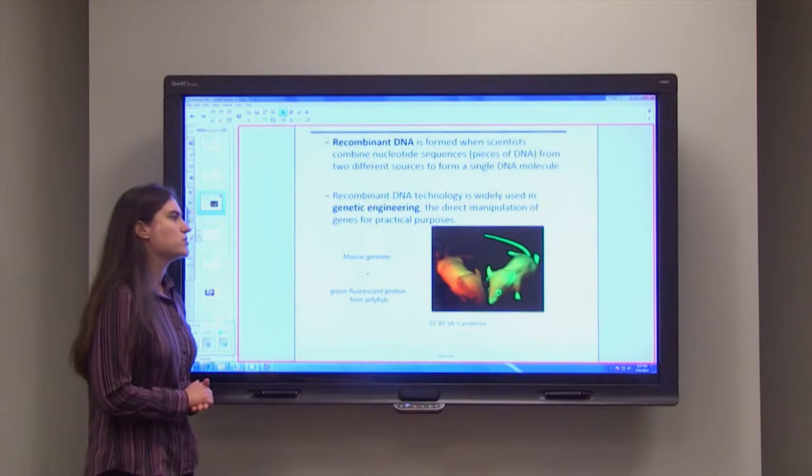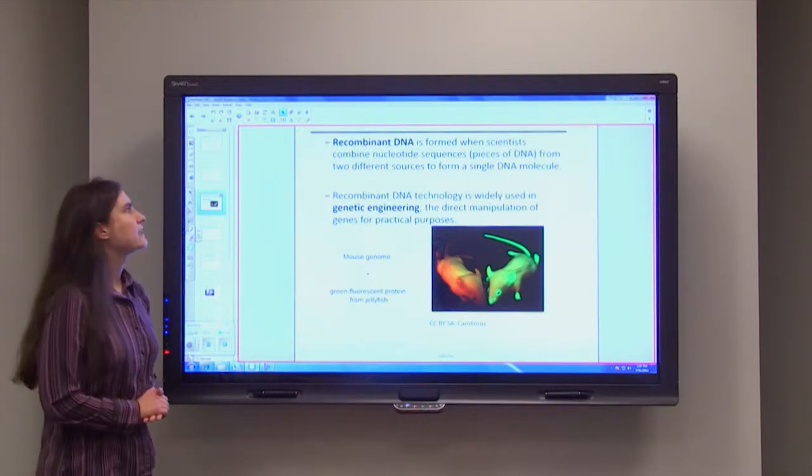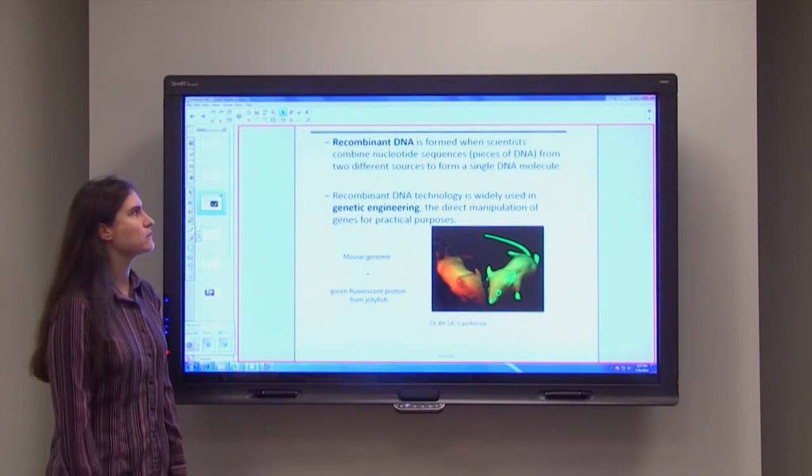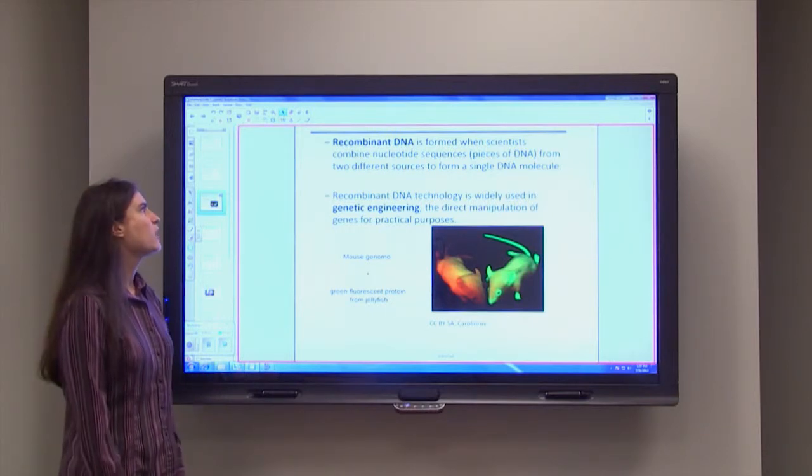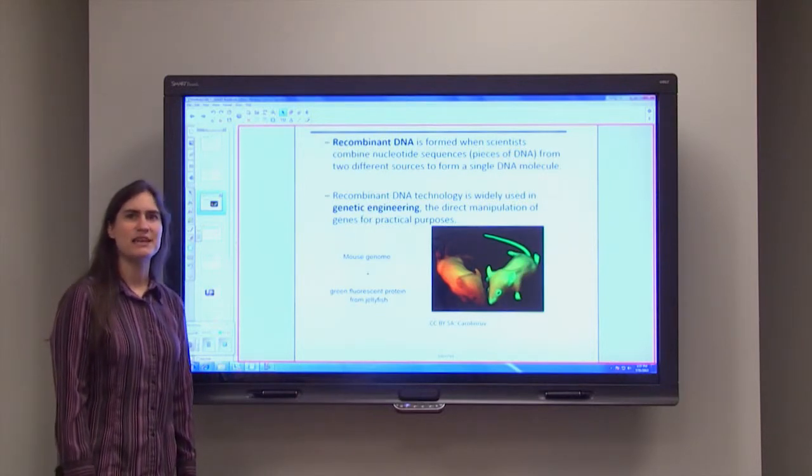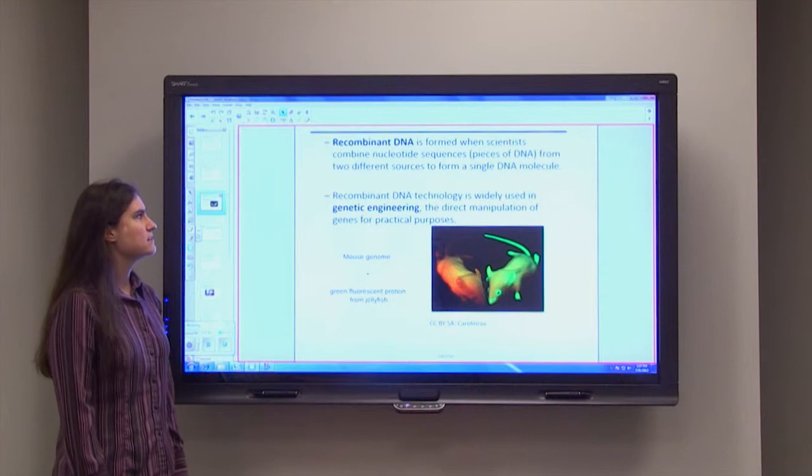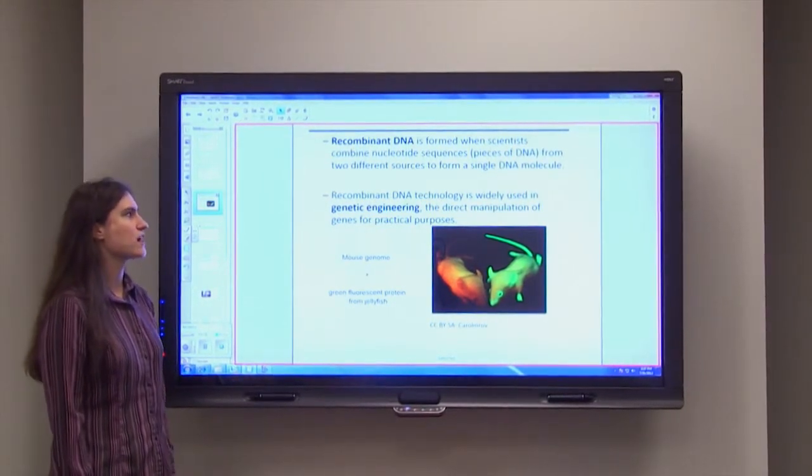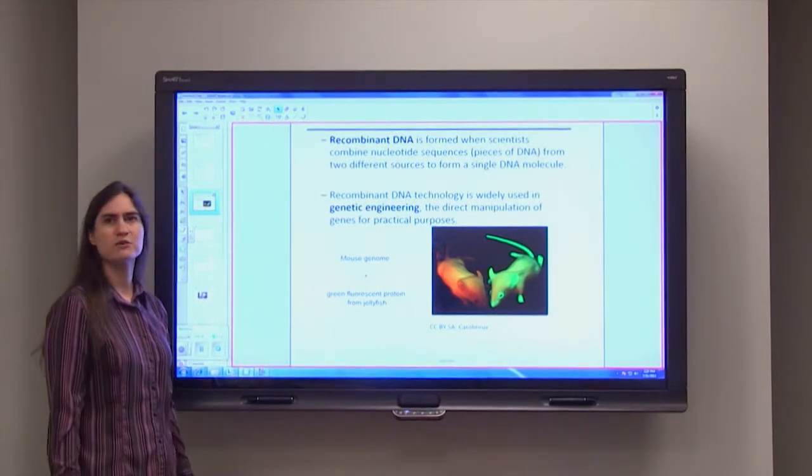So in order to do this, we have to create what's called recombinant DNA. Recombinant DNA is formed when scientists combine nucleotide sequences or pieces of DNA from two or more different sources to form a single DNA molecule. And this recombinant DNA technology is used widely in genetic engineering, which is the direct manipulation of genes for practical purposes.